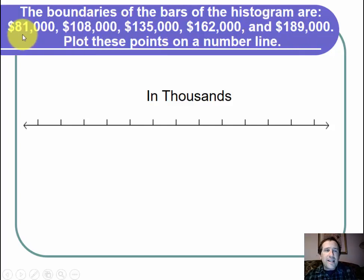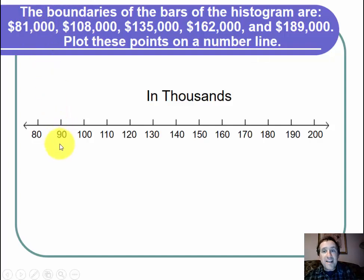So I'm going to start at 80 in thousands, so 80,000. I'm going to end at 200,000. That's a nice round number to finish off on. I'm going to count by tens.